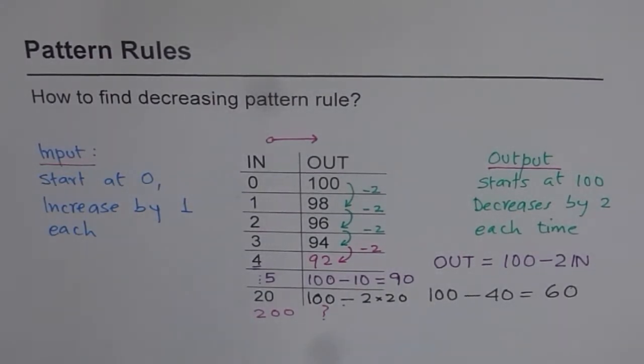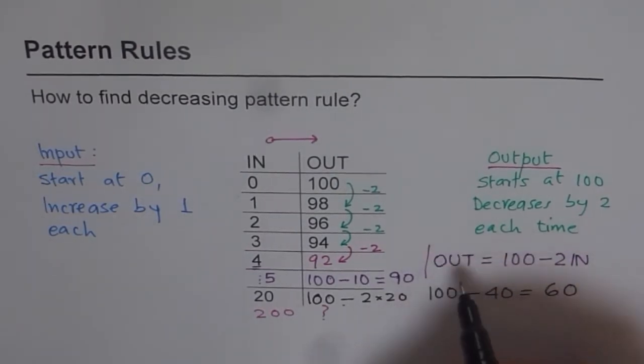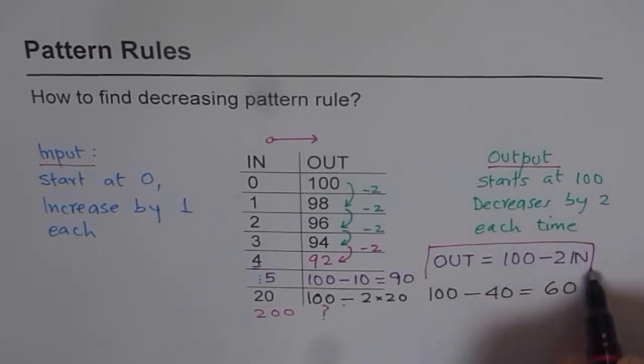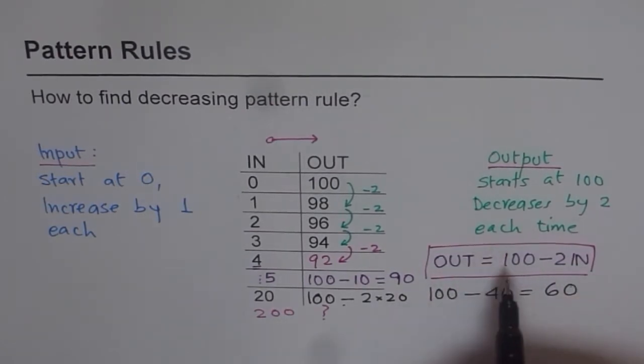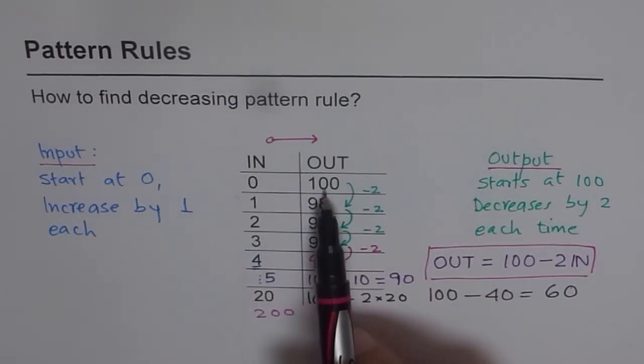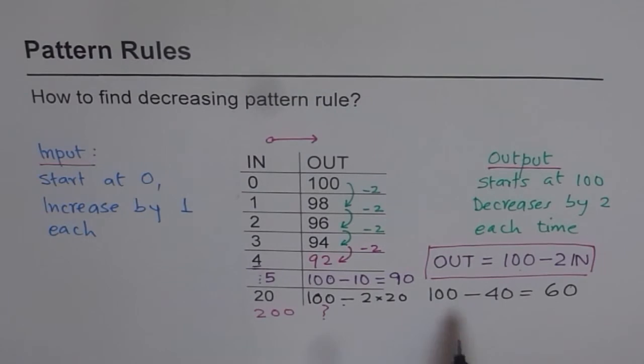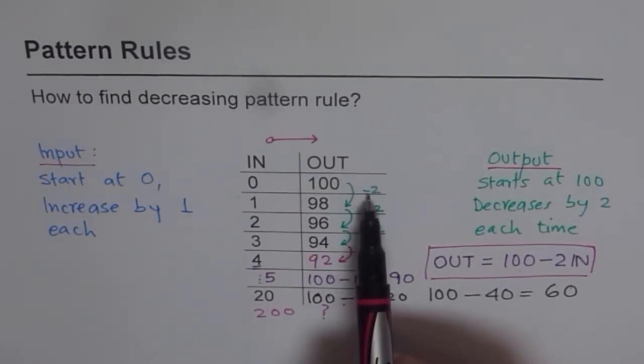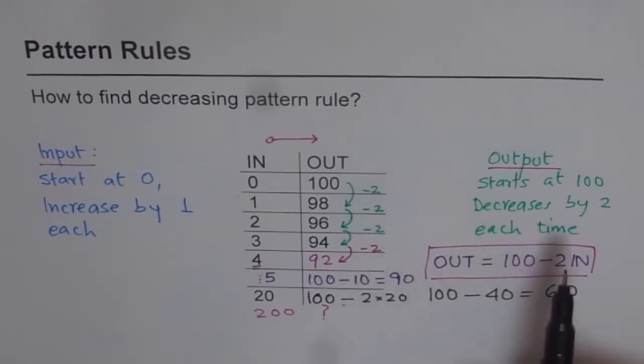Now, I hope you understand how we get the formula. So, it's a very important formula and so useful. The technique is 0 equals to what? 100. That is the starting number. If we get 0 equals to a number, it is kind of easy. You can always start with that number and then take away 2 each time. So, you have to multiply by minus 2 the input number and get the rule.